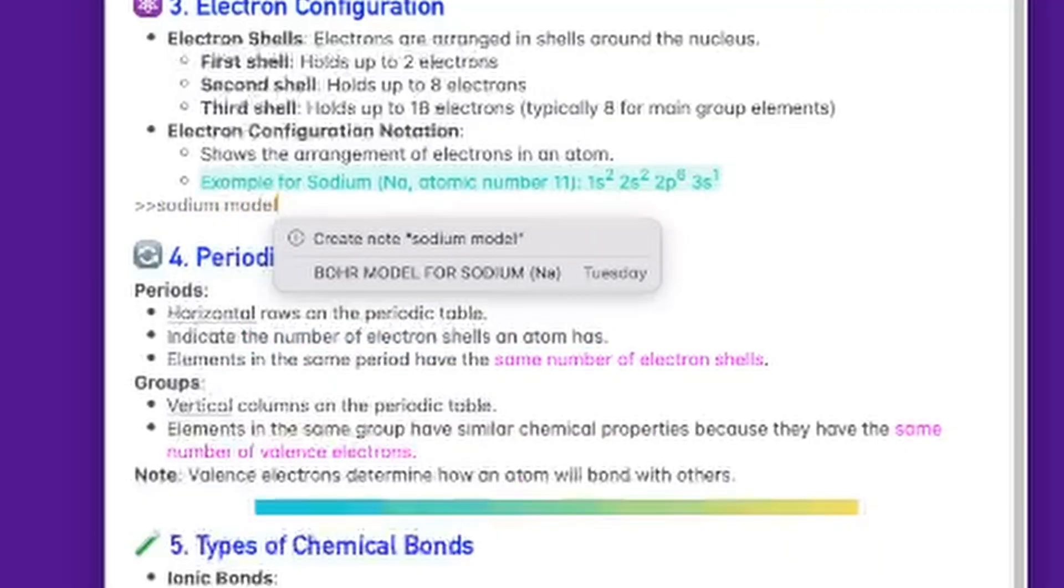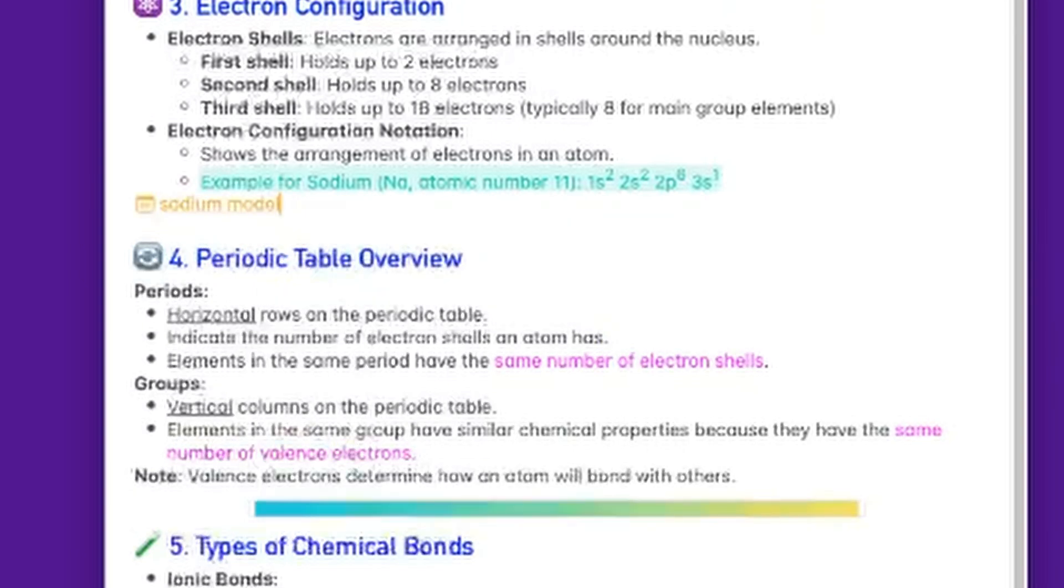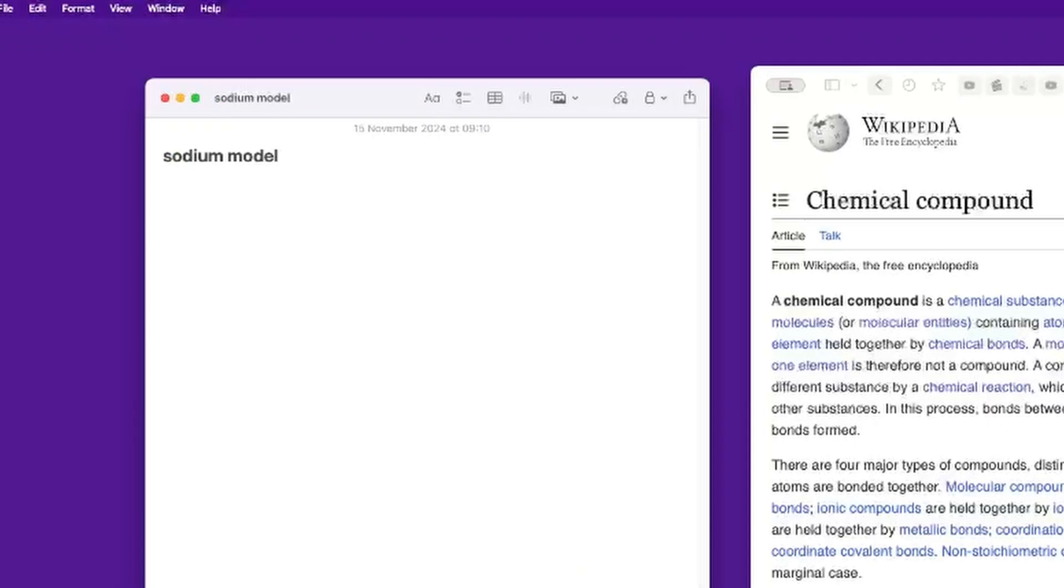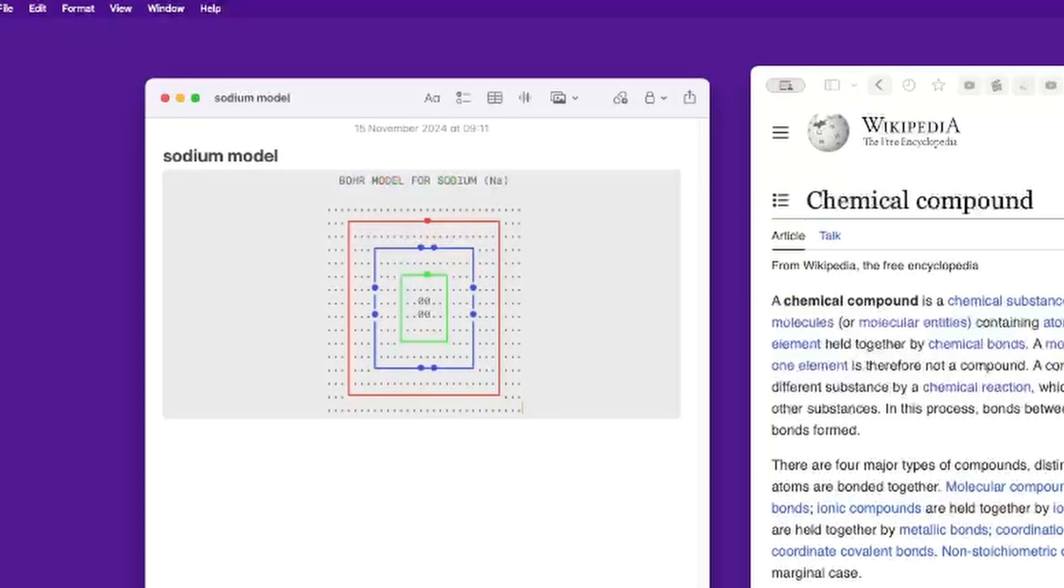In this case though I'm going to create a new note by just typing the title 'sodium model' and as you can see there is an option here to create a note called sodium model. When I click on it that note is just being created. I can then click on this, I will land on my new note, and I can simply paste the stuff that I cut from the previous note.